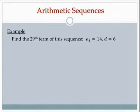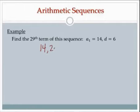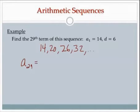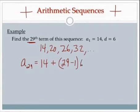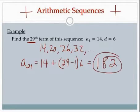Let's find the 29th term of this sequence. I'm given a couple bits of information, and I'm not really given the sequence itself, but I could create it: the first term is 14, and d is 6, so I'm adding 6 each time — second term would be 20, then 26, then 32, and so on. But I don't even need to do that, because I have enough information. I want a sub 29. Using the formula: a sub 1 is 14, n is 29, d is 6. I take 29 minus 1, that's 28, times 6, add 14, and I get 182. The 29th term of the sequence is 182.